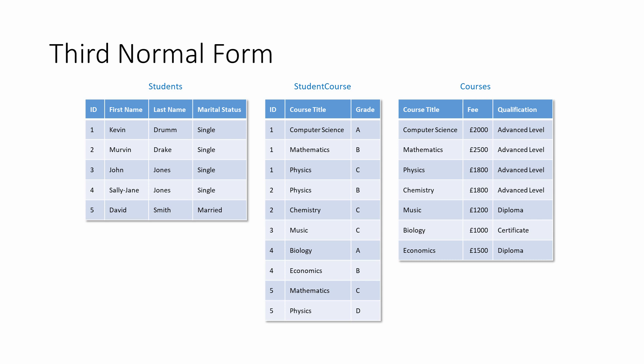But what's meant by a transitive functional dependency, and how can you spot one? Let's start by reviewing the term functional dependency. In the student's table, the first name is functionally dependent on the ID. The ID is called the determinant, and the first name is called the dependent. This is normally written like this. Another way of saying it is that there is exactly one first name for any given instance of a student.